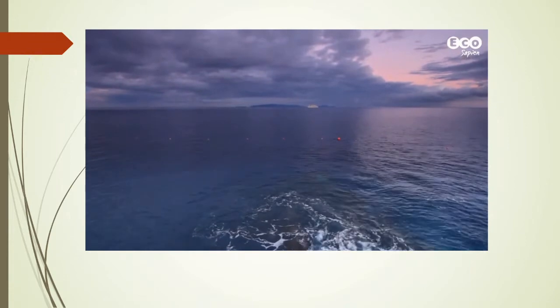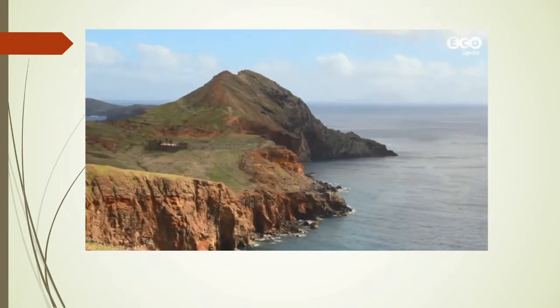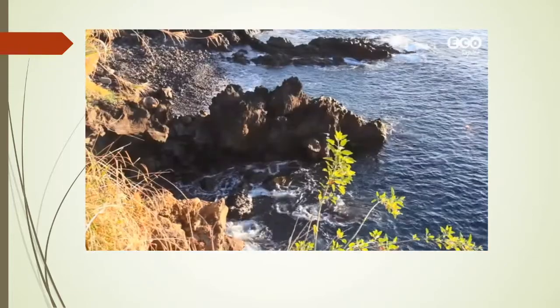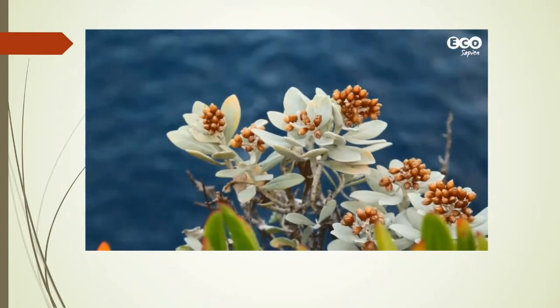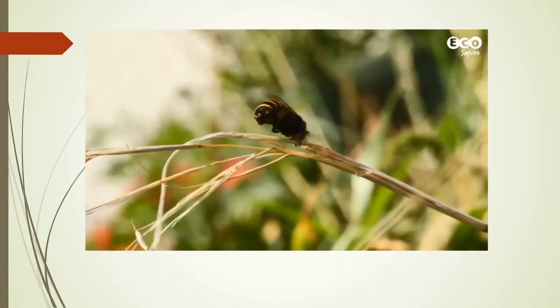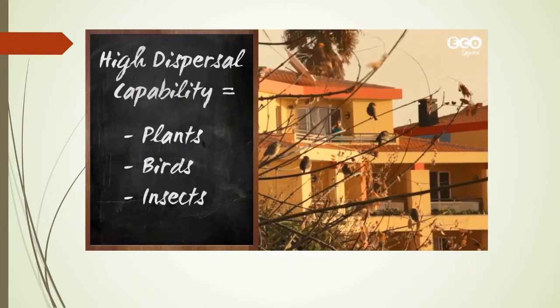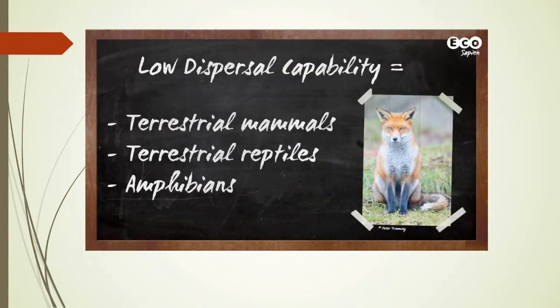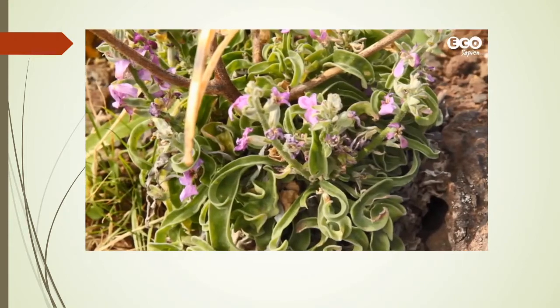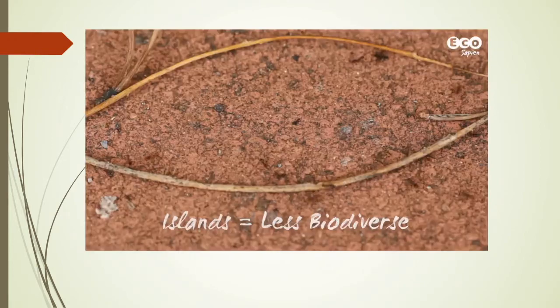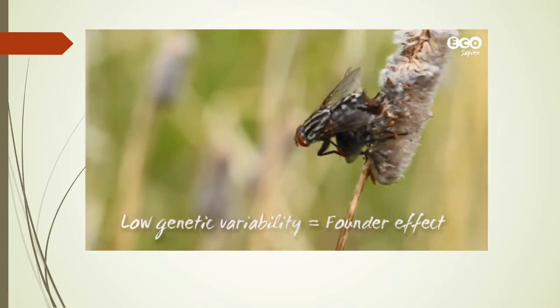Being separated from continents by miles of water makes islands pretty isolated. Like Madeira, oceanic islands are formed by volcanic activity or even coral reef growth. This new patch of land is open to colonization and exploitation by organisms. The trouble is, the only way to reach the island is by sea, flight, or even being blown over by the wind. This means organisms with a high dispersal capability — i.e., plants and birds — are much more common on islands, while animals like mammals that have poor dispersal capability rarely make it to isolated islands. Over time, ecological succession takes place; some species that arrive survive and form populations. Because of the isolation, islands tend to be much less biodiverse than mainland ecosystems and exhibit low genetic variability.